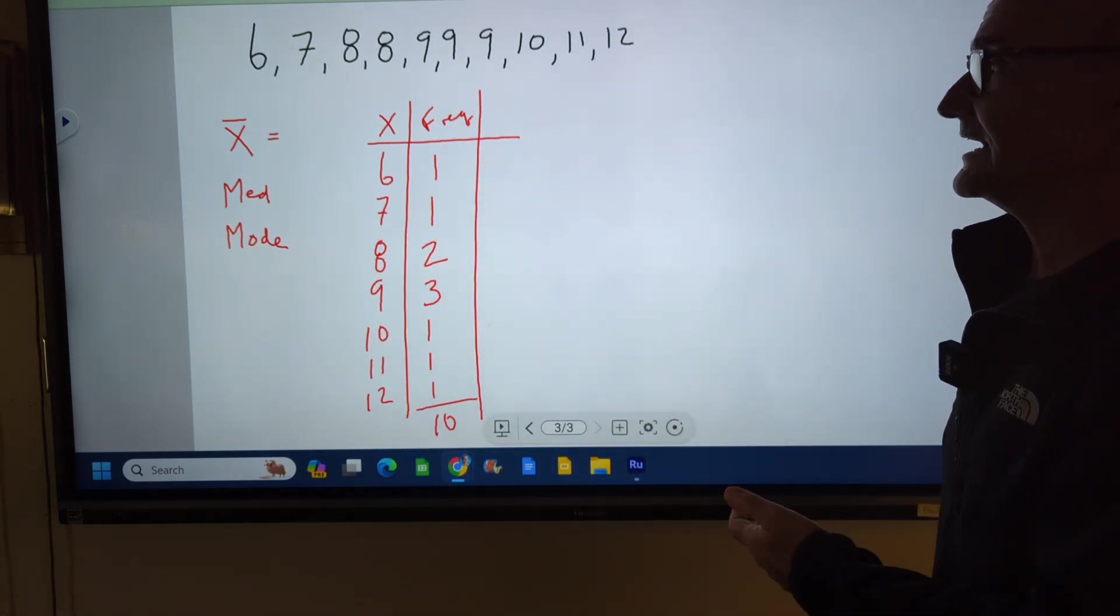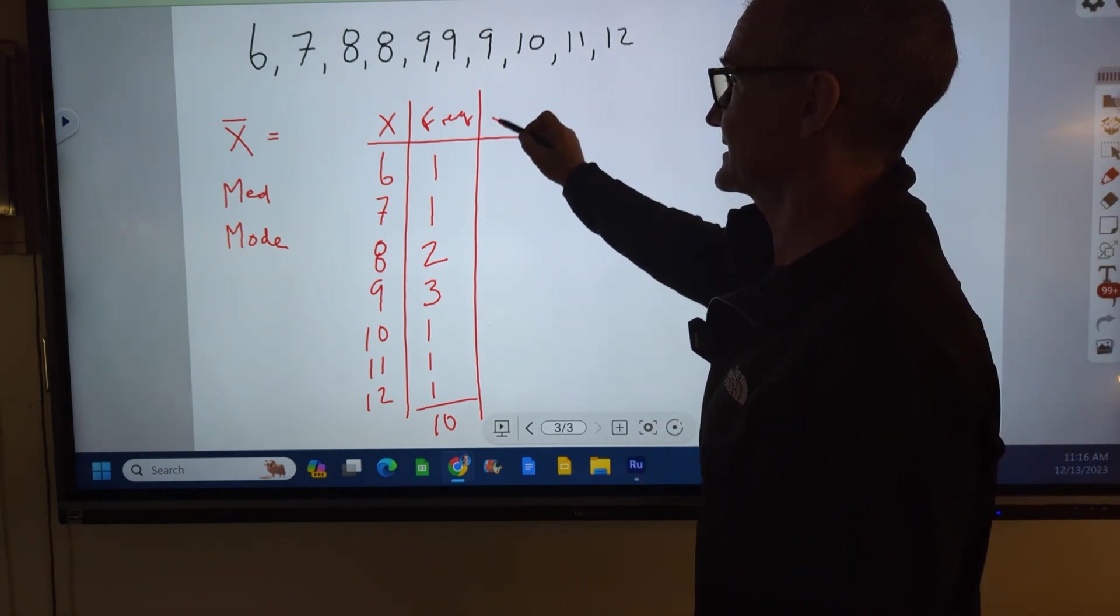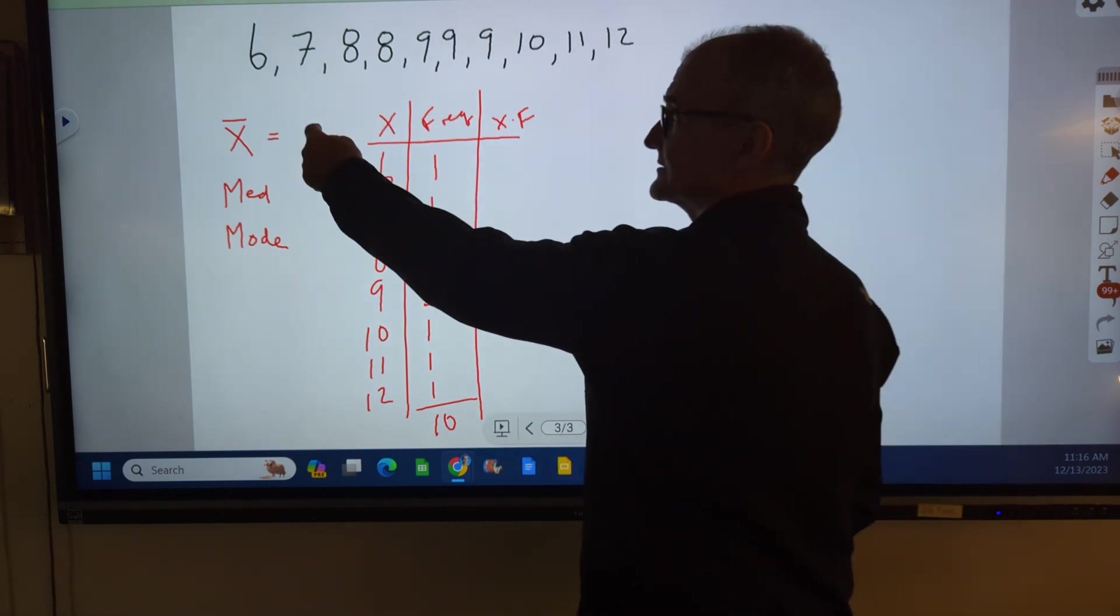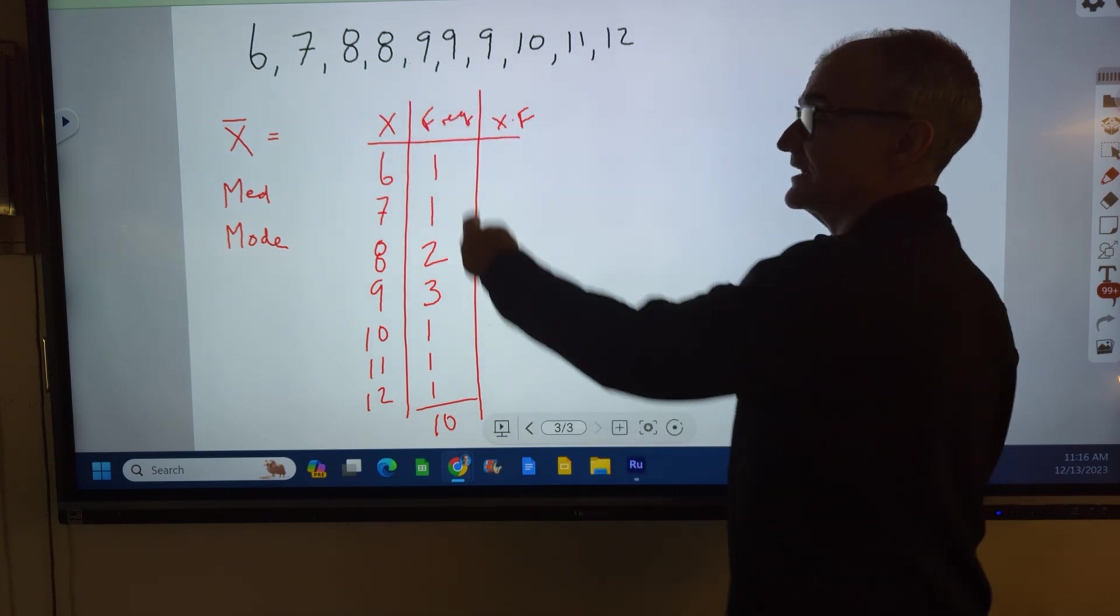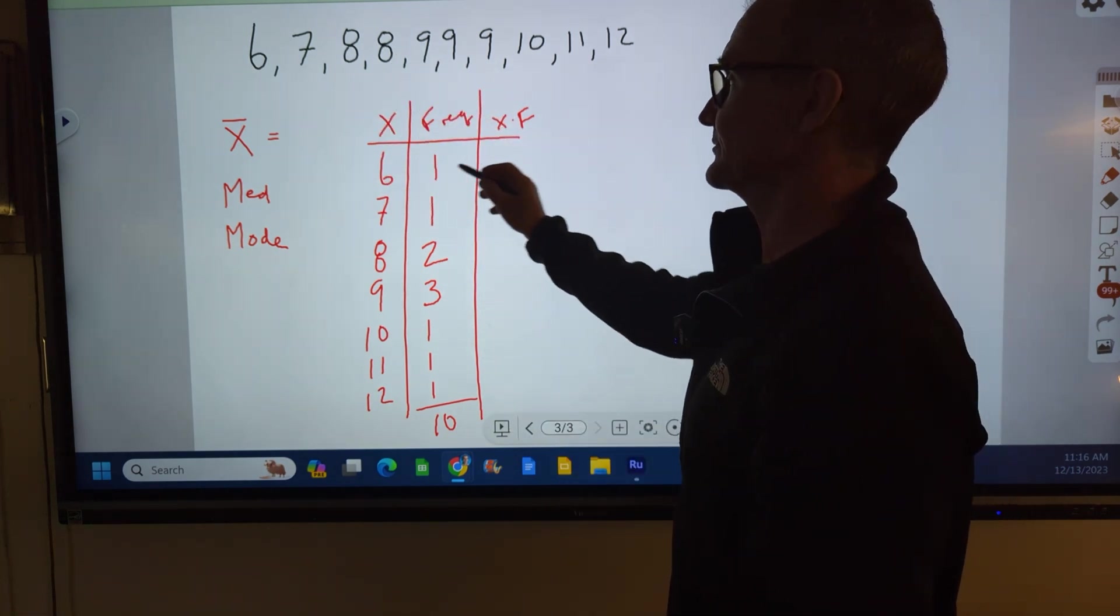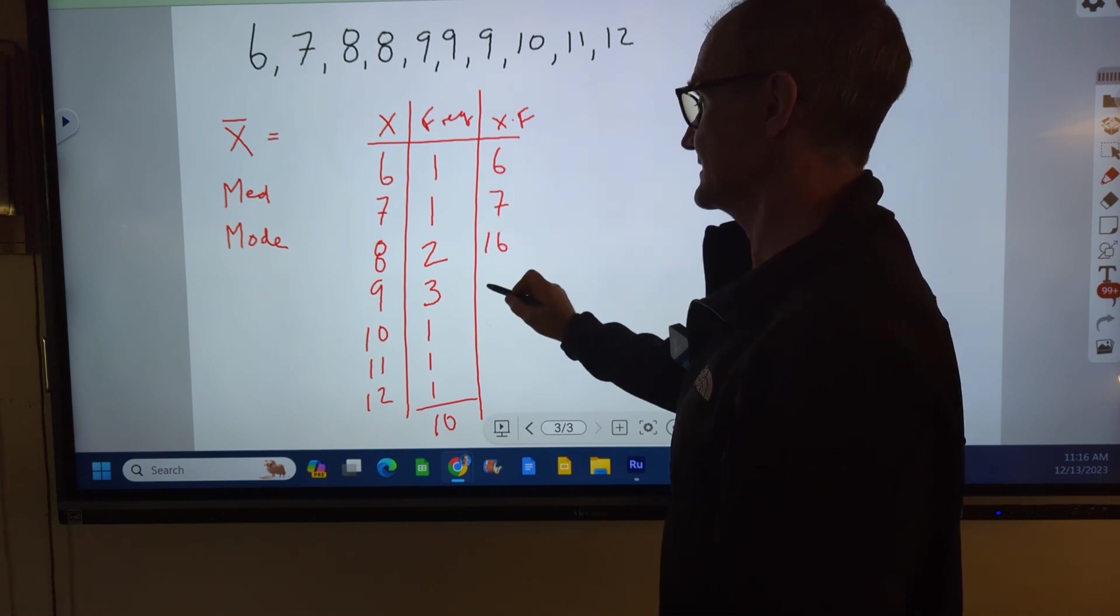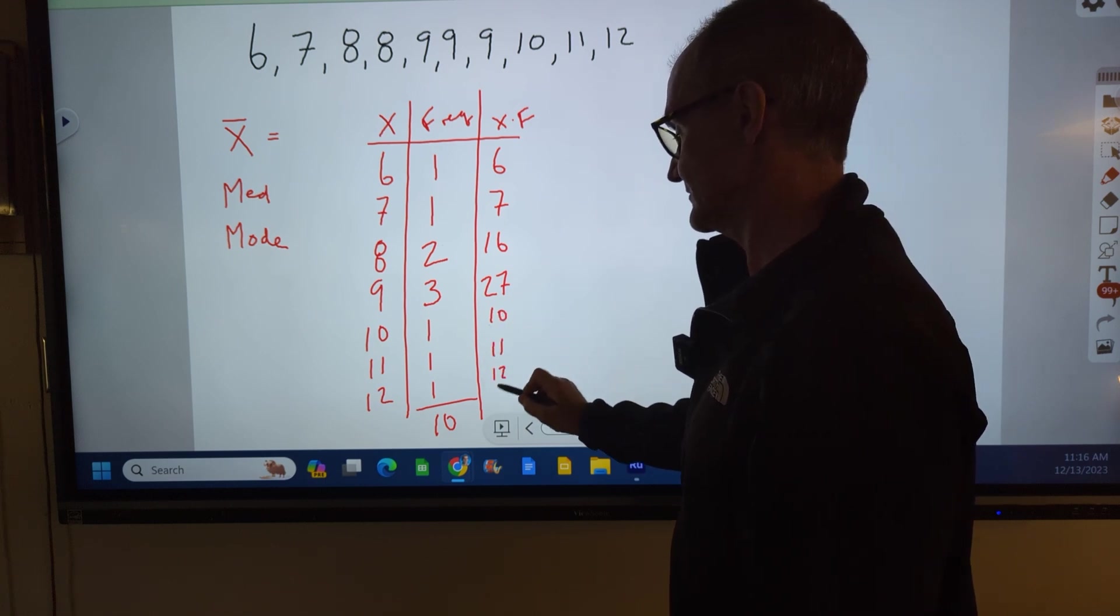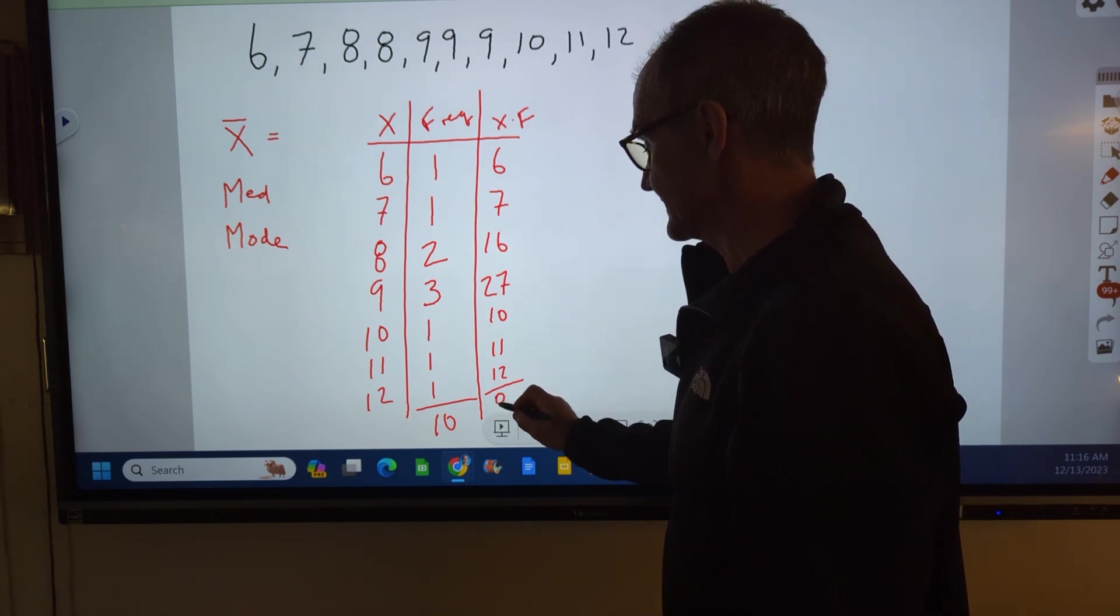Now I want to find the average. The first column I'll create for finding the average is x times the frequency of x, because I'm really adding 6 plus 7 plus 8 plus 8 plus 9 plus 9 plus 9. So I'm going to multiply these together to get 6, 7, 16, 9 times 3 is 27, 10, 11, and 12. I'm going to add this up and I get 89.